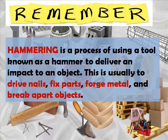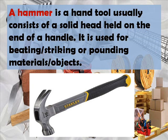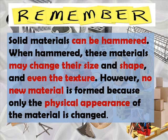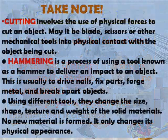Remember, hammering is a process of using a tool known as a hammer to deliver an impact to an object. This is usually to drive nails, fix parts, forge metals, and break apart objects. A hammer is a hand tool usually consisting of a solid head held on the end of a handle. It is used for beating, striking, or pounding materials or objects. Remember, solid materials can be hammered. When hammered, these materials may change their size, shape, and even the texture. However, no new material is formed because only the physical appearance of the material is changed.